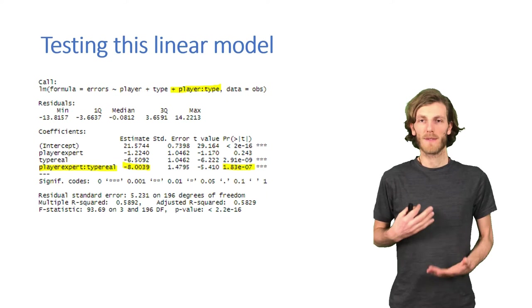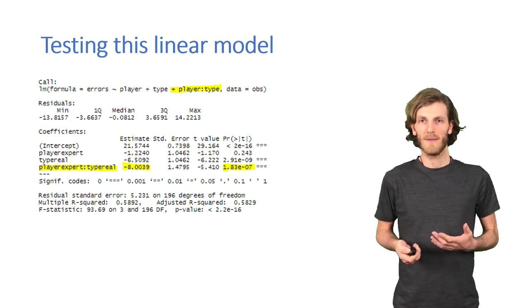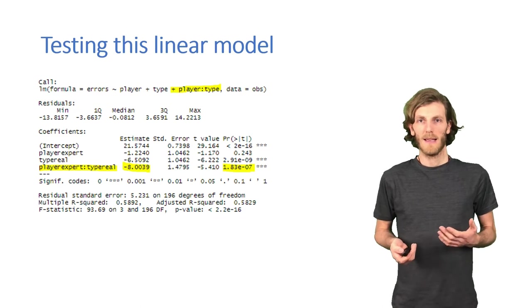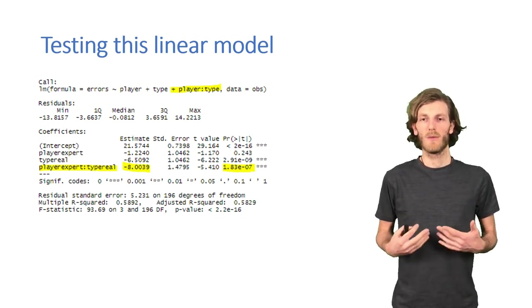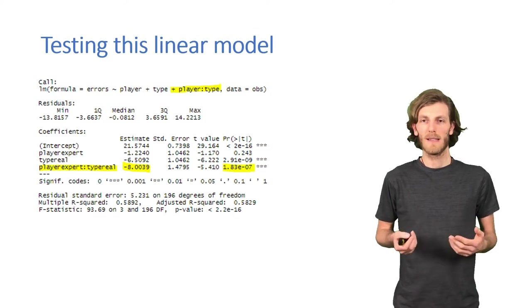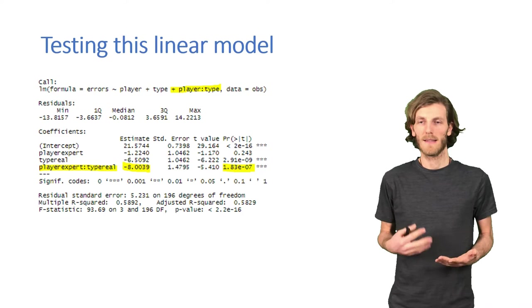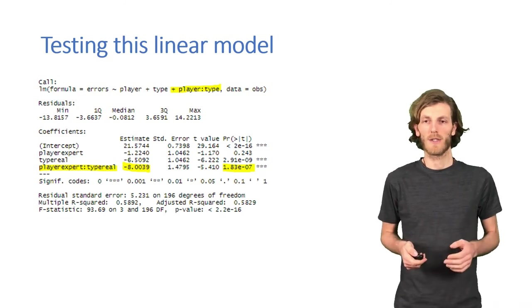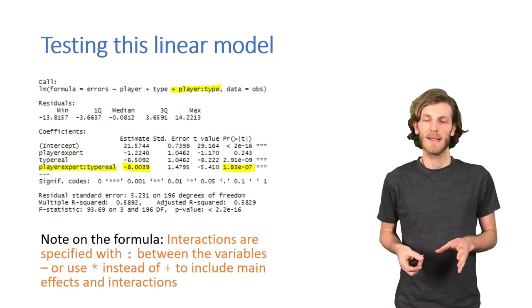However, we now have quite a lot of different coefficients to make sense of here. So, it is best to move quite quickly to a plot. So, to use this to see, well, is there a significant interaction? There is, and then look at a plot to figure out what the interaction actually looks like. Before we do that, just a quick comment about the formula syntax.